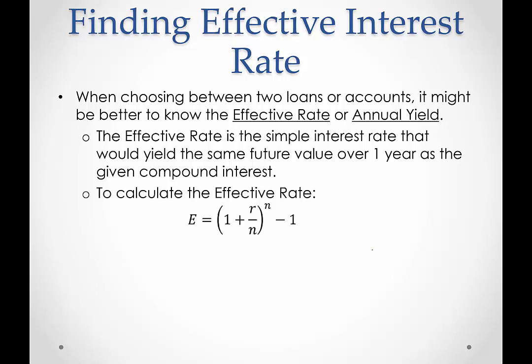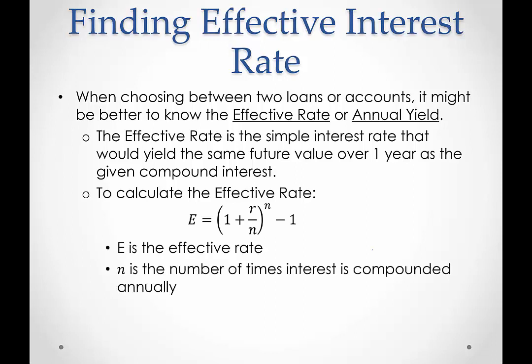To calculate this effective rate, we use this formula. E, the effective rate, is equal to 1 plus R over N to the N minus 1. N is the number of times that the interest is compounded annually, and R is the interest rate per year. You'll notice that we don't include the time, and that's because the time is going to be one year, so T would be 1. This minus 1 is subtracting out the amount invested or the amount borrowed.